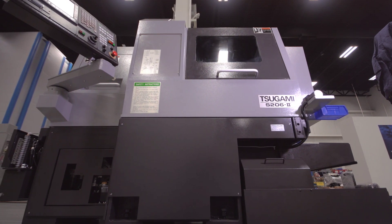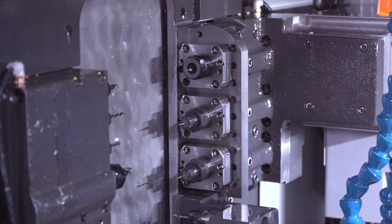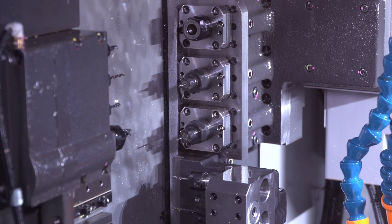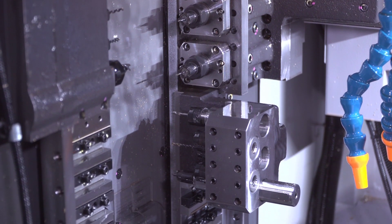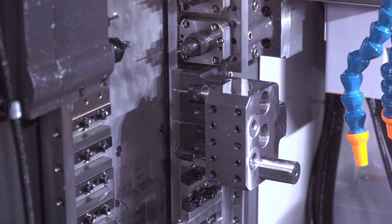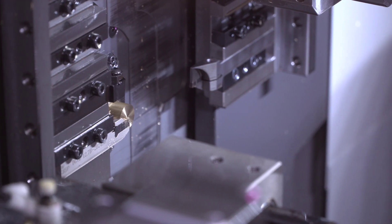Another key feature on this machine is the cartridge type spindles on the rear gang slide. This will allow you to put in large attachments: whirling, hobbing, cross drilling, and face drilling units.